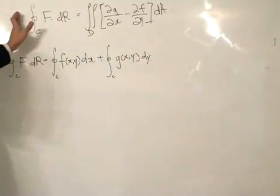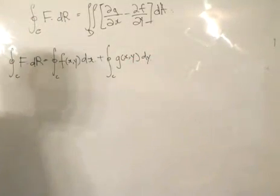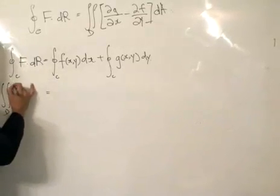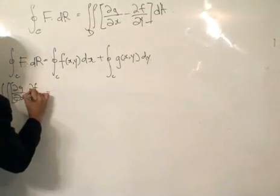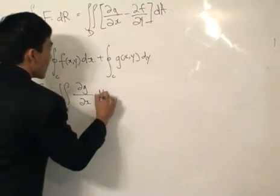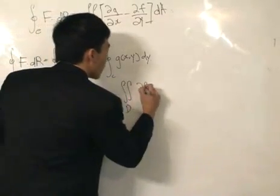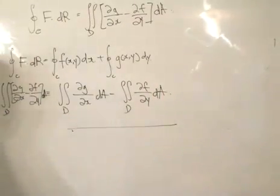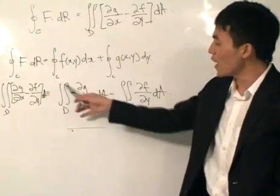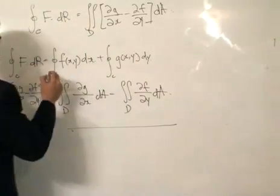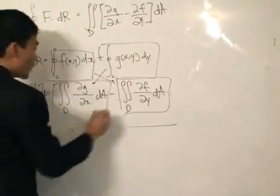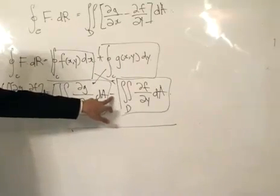This is what we write as the left-hand side of the equation. Similarly, we can rewrite the right-hand side. The double integral of the partial of G with respect to x, minus the partial of F with respect to y, times dA, equals the double integral of the partial of G with respect to x, dA, minus the double integral of the partial of F with respect to y, dA. The proof works by matching up these components. If we can describe area D in a certain way, we can match up these integrals and, when we add them up, we get Green's theorem.